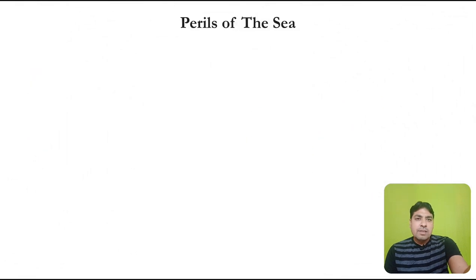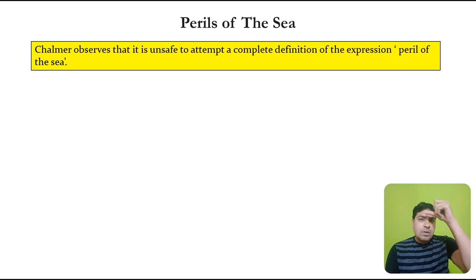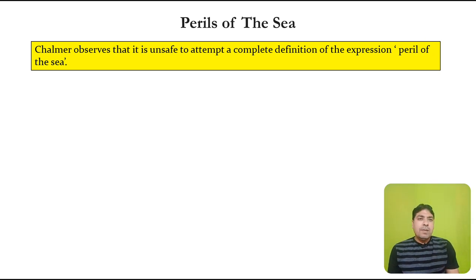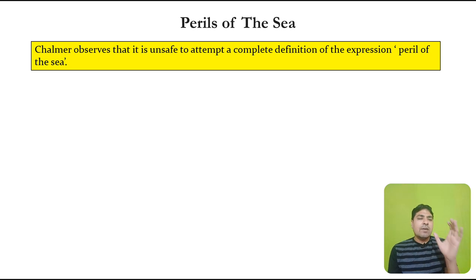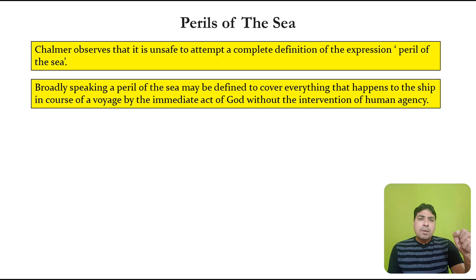Perils of the sea. Talmar observes that it is unsafe to attempt a complete definition of the expression 'perils of the sea.' There is no complete definition of perils of the sea. Broadly speaking, a peril of the sea may be defined to cover everything that happens to the ship in the course of a voyage by the immediate act of God without the intervention of human agency.